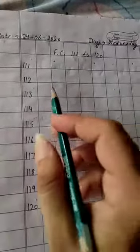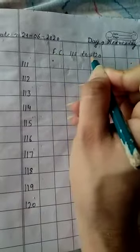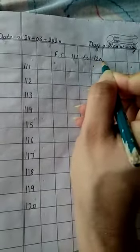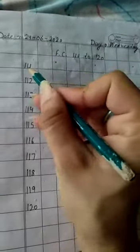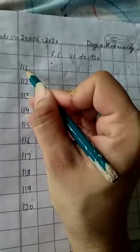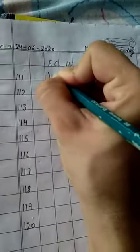So let's start with our maths work and today our topic is forward counting 111 to 120. Students, it's your new work, so see carefully. So what is this? 111. Let's write it like this way, okay? 111.